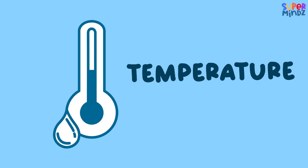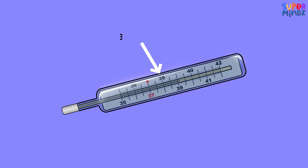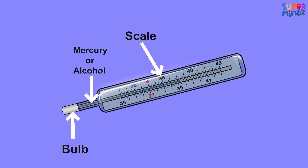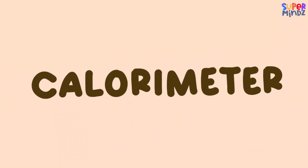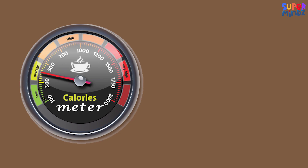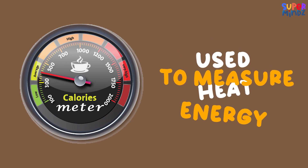Did you know that we use different devices to measure temperature and heat? Thermometer: this is a device used to measure temperature. It has a scale and a bulb filled with liquid like mercury or alcohol that expands or contracts as the temperature changes.